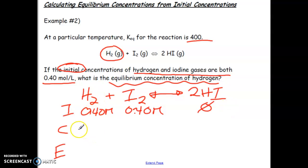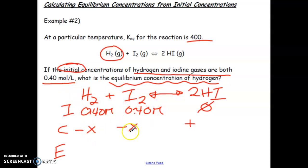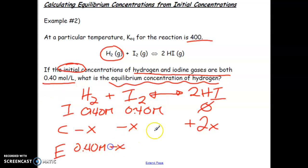So our change is always a negative change for reactants and positive change for products. The factor it changes by is always x, and you apply the mole ratio as well. So both hydrogen and iodine are going to be going down by negative x, and HI is going up by 2x — we're producing HI twice as quickly as it's consumed. So our equilibrium row is 0.40 minus x for the reactants, and 2x for HI.